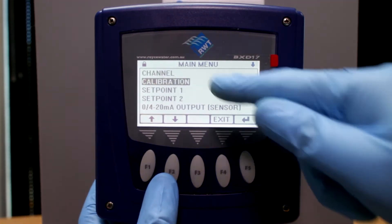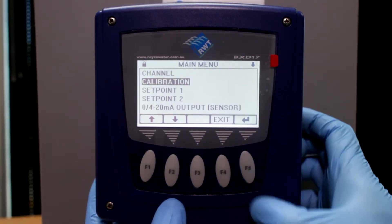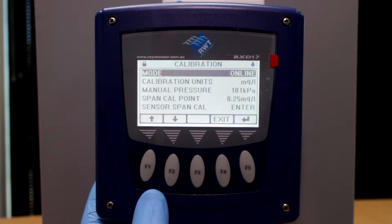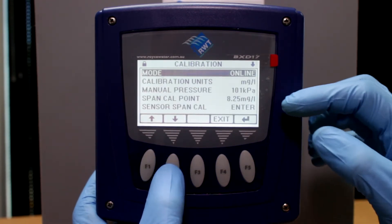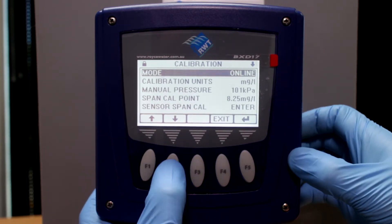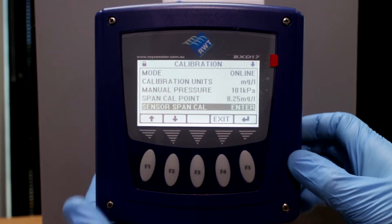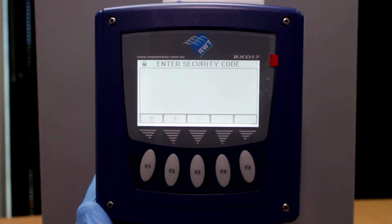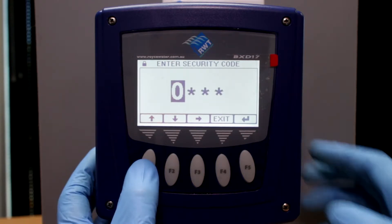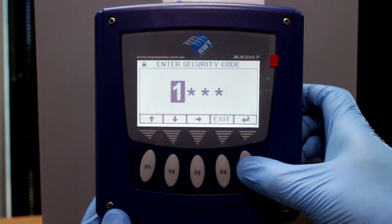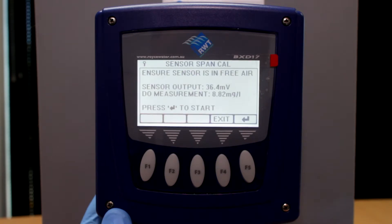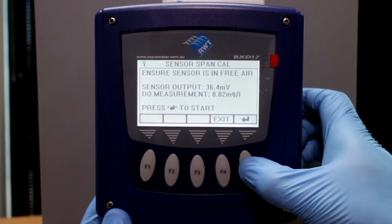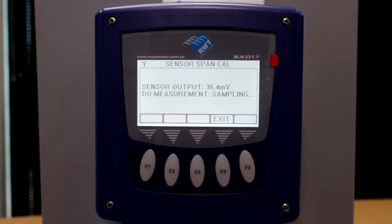F2 will bring you down to calibration, F5 for enter. You'll notice there's a sensor span calibration. F2 will bring you down to sensor span calibration, push enter which is F5. Your security code is 1 and push enter, and enter again. This is now taking a sample signal from your new probe. Calibration will soon be complete.